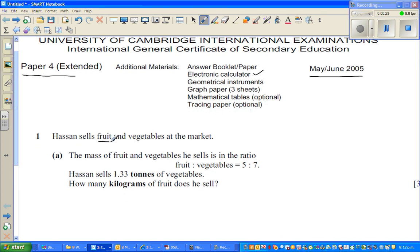Hassan sells fruits and vegetables. The mass of fruit and vegetables he sells is in the ratio of fruit to vegetables is five to seven. I can say f of fruit to vegetables is 5x is to 7x. So this means he is selling fruits 5 times x and vegetables is 7 times x. So we need to find first x.